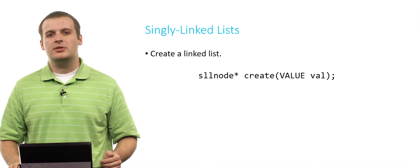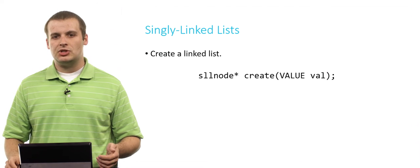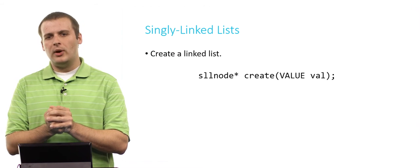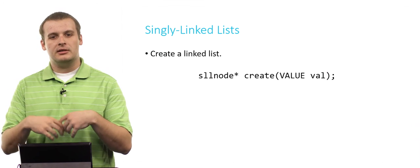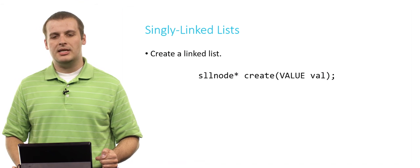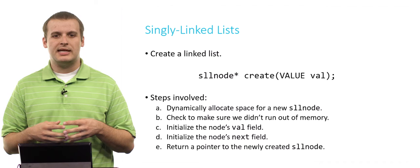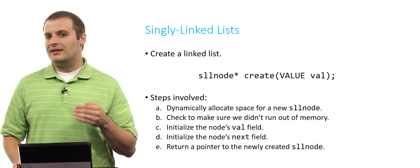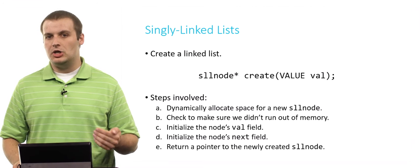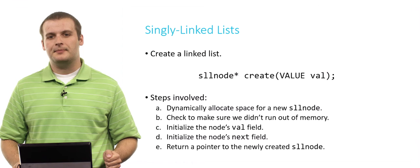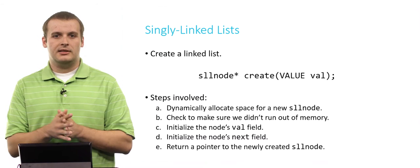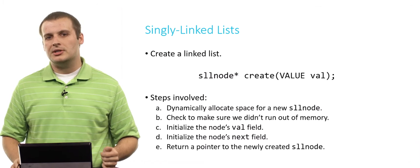To create a linked list, we might define a function with the prototype sllnode star create, passing in one argument of some arbitrary data type, and returning a pointer to a singly linked list node. The steps are: first, dynamically allocate space for a new node using malloc, and immediately check to make sure we didn't get back null — because if we try to dereference a null pointer we'll get a segfault. Then we initialize the value field and the next field, and finally return a pointer to the sllnode.